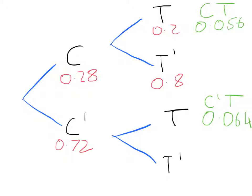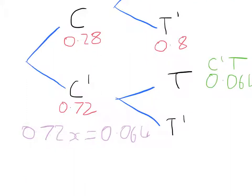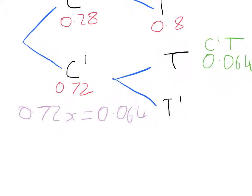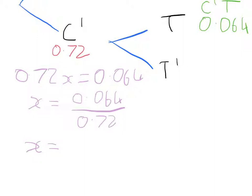So we know that 0.72x equals 0.064. And so what we can do by doing a little bit of rearranging, a little bit of algebra, we get x equals 0.064 divided by 0.72, which means that x equals 0.089. Two significant figures is fine.